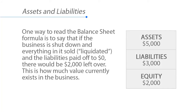So assets of $5,000 minus liabilities of $3,000 leaves us with $2,000 in equity. One way to read this is to say that if the business is shut down and everything in it is sold, or liquidated, and all the liabilities paid off to $0, there would be $2,000 left over. This is how much value currently exists in the business.